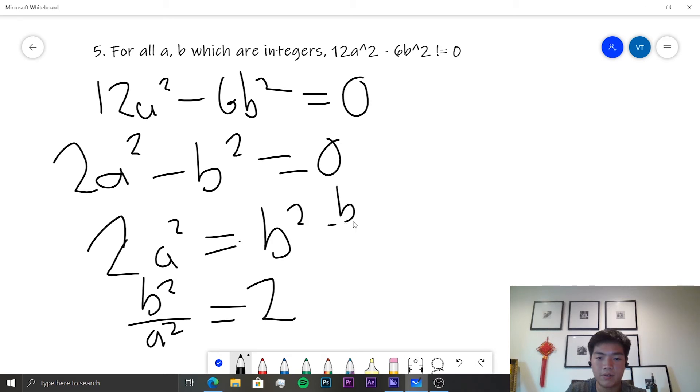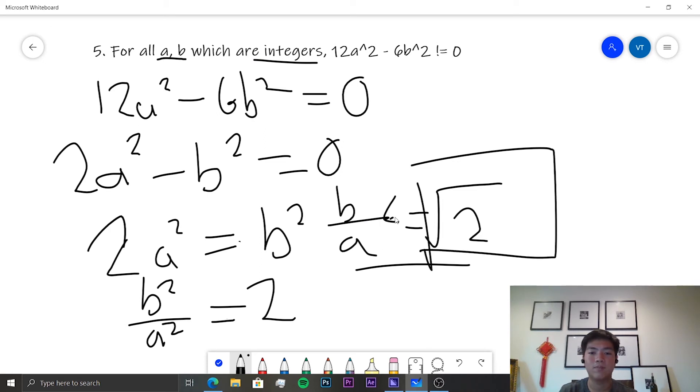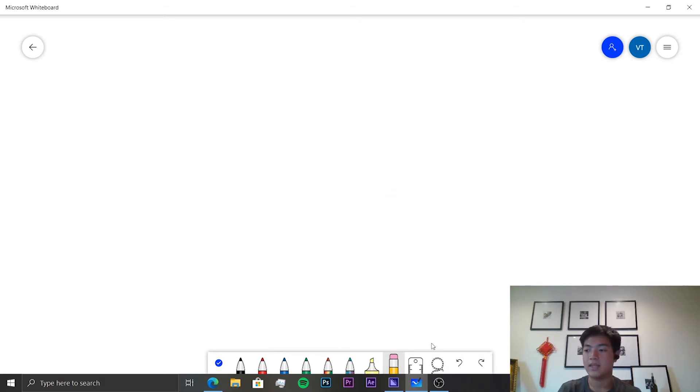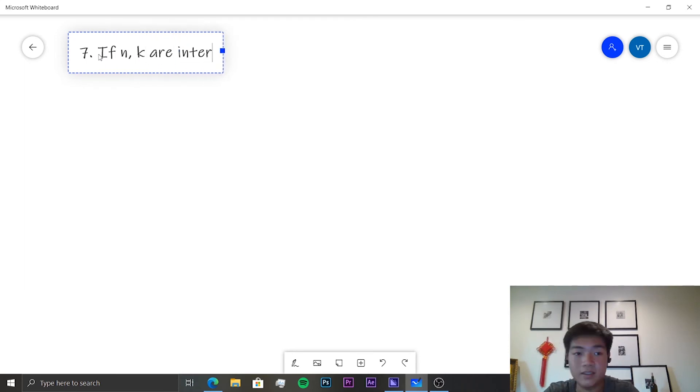So b over a equals the square root of 2. And this is a problem. Because if we assume that a and b are integers, then we cannot express the square root of 2 in this form with 2 integers. And so therefore, this is a proof by contradiction that this is not possible. Okay, next one. So we have the seventh problem. If n and k are integers, n squared plus 2 is not equal to 4k.